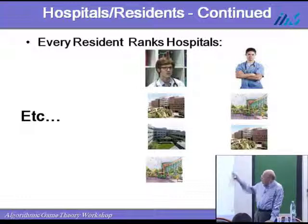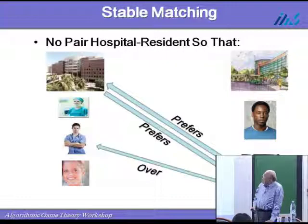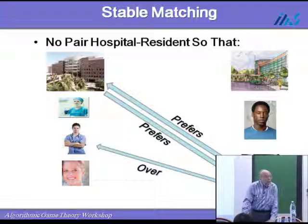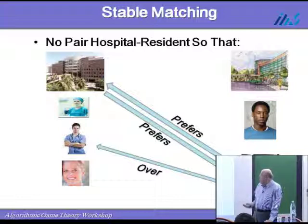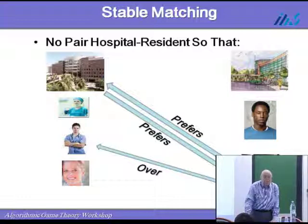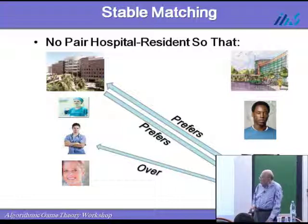And then there is a certain organization that creates a stable matching. The property of the stable matching is that you don't have a pair of hospital and resident such that the resident prefers that hospital over the place he was assigned to, and the hospital prefers him over the one they have. There would be instability because the hospital is the boss — they simply kick out the resident they have and take the one they prefer. That is a very classical problem: the stable marriage problem, for which there is an algorithm.